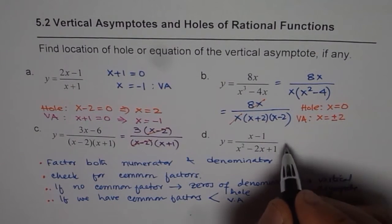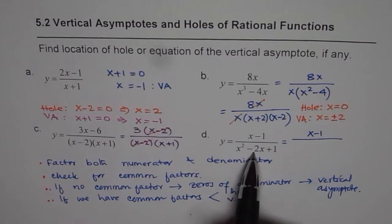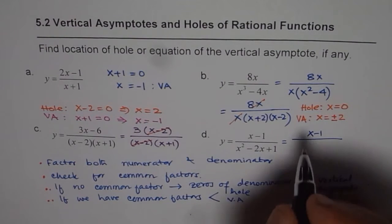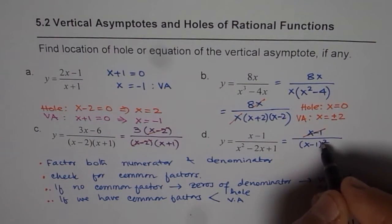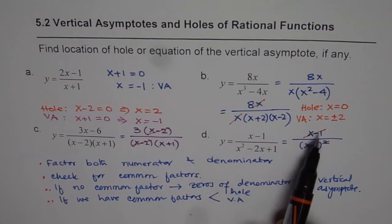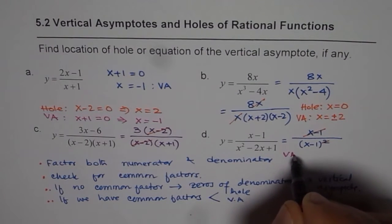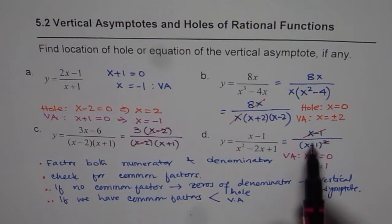For part d, we have (x − 1) divided by (x² − 2x + 1). Factoring the denominator: x² − 2x + 1 = (x − 1)². This is a tricky case. One factor (x − 1) cancels with the numerator, so you might expect only a hole, but there is still a remaining (x − 1) factor in the denominator which leads to a vertical asymptote. So in this case we have only a vertical asymptote at x = 1.